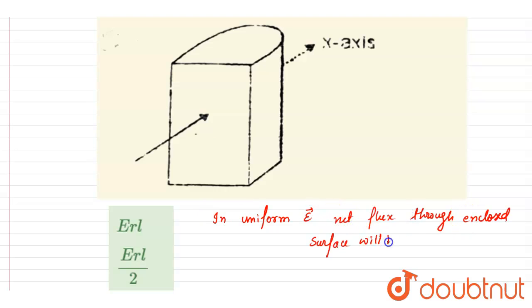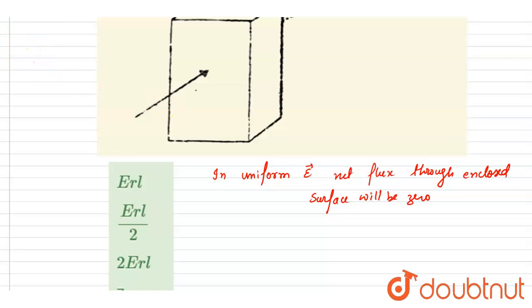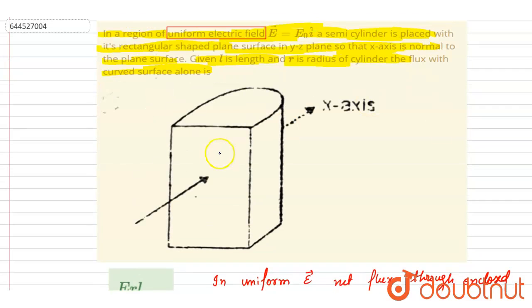So if you see here, the area vector for this plane will be directed like this and here the flux is entering. We want the flux for this curved part and the electric field is like this.